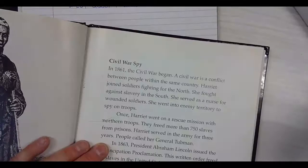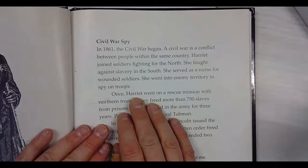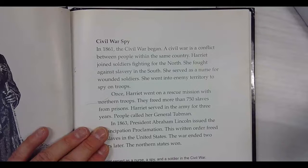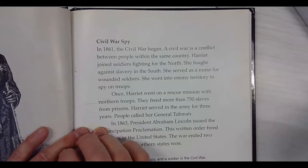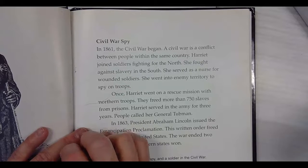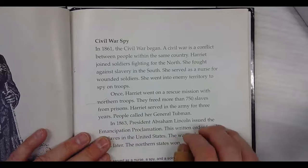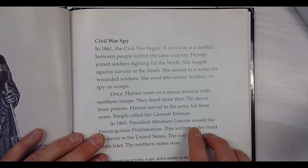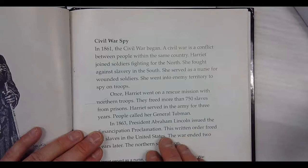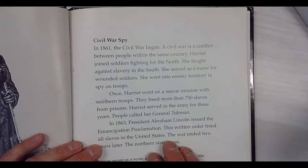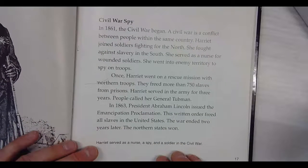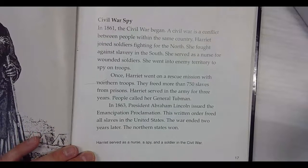Like Civil War spy. In 1861, the Civil War began. A Civil War is a conflict between people within the country. Harriet joined the soldiers fighting for the North. She fought against slavery in the South. She served as a nurse for wounded soldiers. She went into enemy territory to spy on troops. Once Harriet went on a rescue mission with Northern troops. They freed more than 750 slaves from prisons. Harriet served in the army for three years. People called her General Tubman.